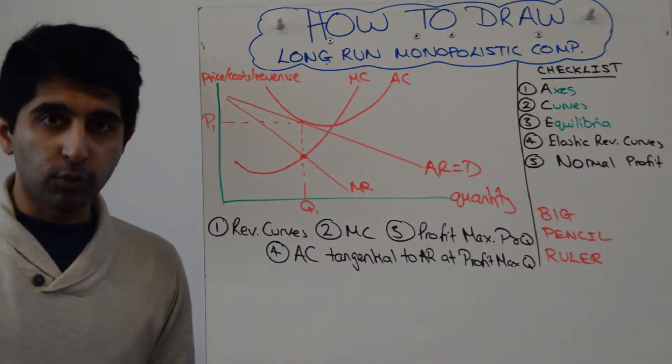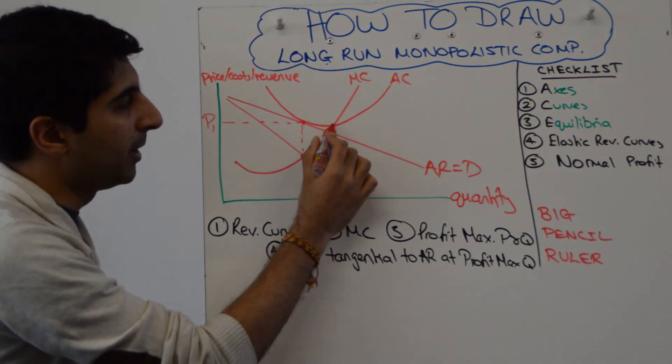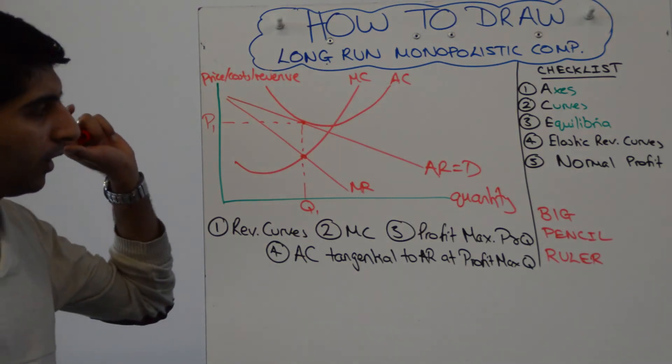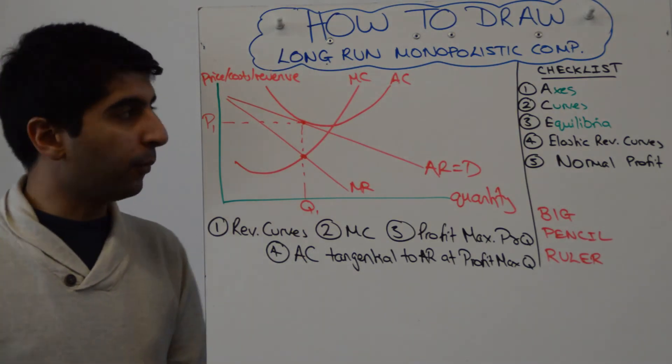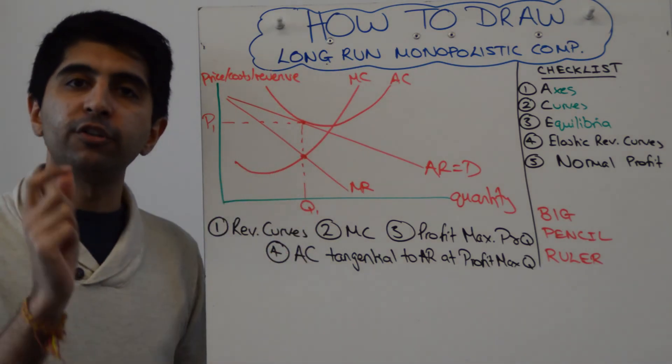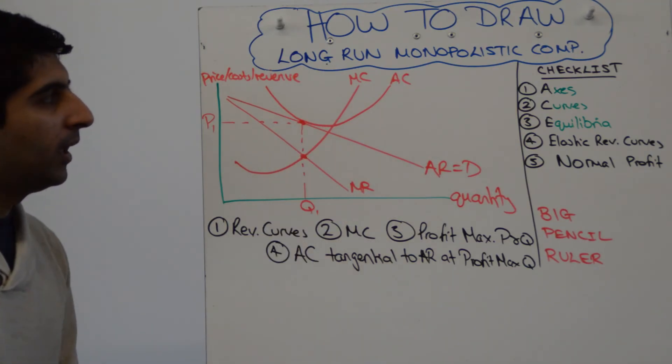Draw it so it just touches at this point here, tangential there, and then the minimum so that it's cutting MC. That is the diagram. And therefore we've shown normal profit. Now at Q1, AC is equal to AR. We have shown normal profit right there.